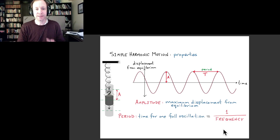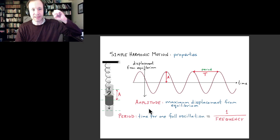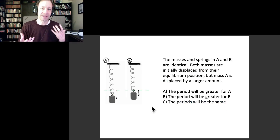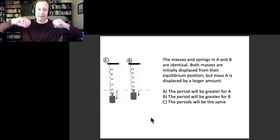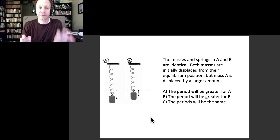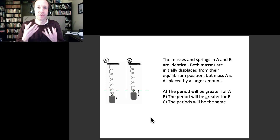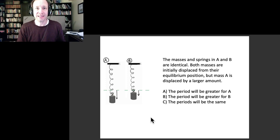Next, we want to understand what determines these properties — what does the period depend on, what does the amplitude depend on? Here's a question to think about using your intuition: if you have two identical objects subject to the same restoring forces — two identical masses on two identical springs — and you displace the first one more and the second one less, then let them go, which one is going to have the greater period? Is it the one displaced more or the one displaced less? Find out the answer in the next video.